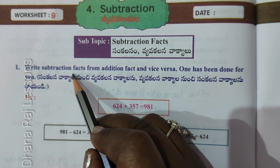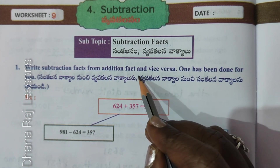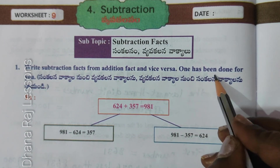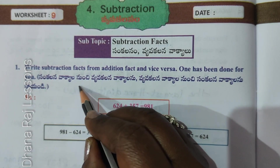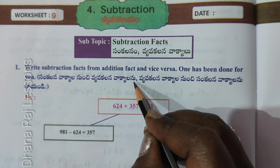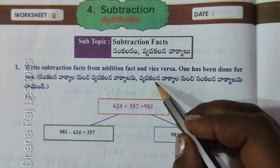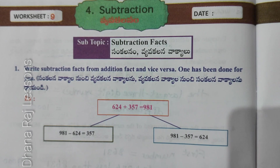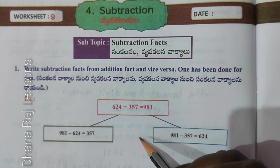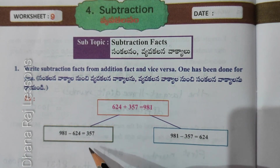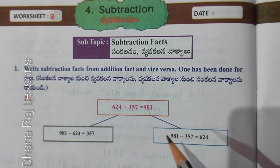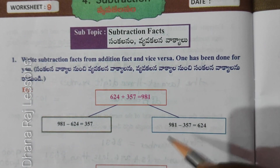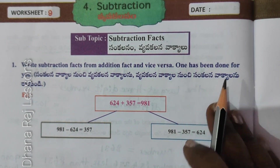Write Subtraction Facts from Addition Facts and vice-versa. One has been done for you. From Sankalna Vakiyalanu (addition sentences), write Vyavakalna Vakiyalanu (subtraction sentences). If you have a plus, you must write a minus; if you have a minus, you must write a plus. An example has been shown. Let us understand the problems below.